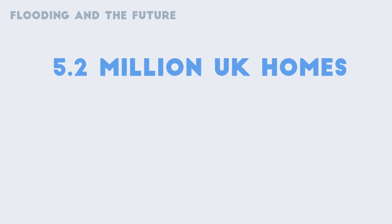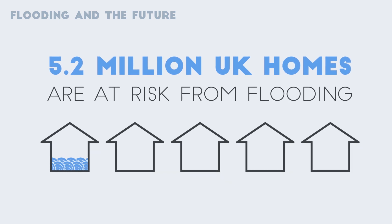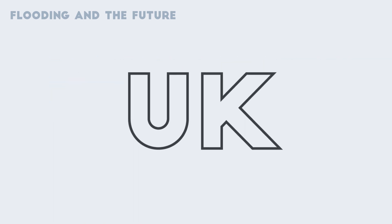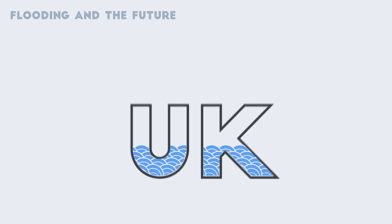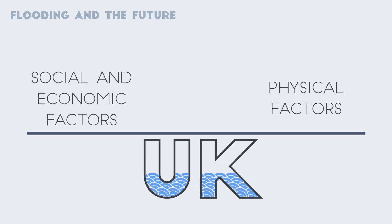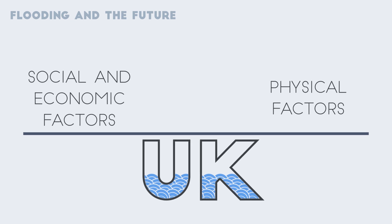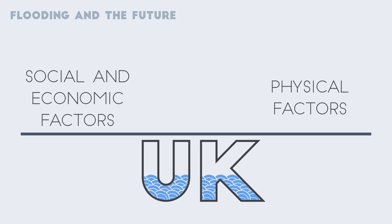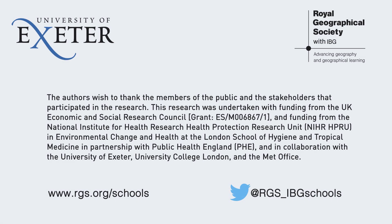In the UK, it is projected that 5.2 million homes are at risk from flooding — that's one in five of the houses in the UK. Looking to the future, we need to think about how the UK's flood risk is changing, and how social and economic factors have as much of a role to play as physical changes to the environment. This will be important if we are to understand how we can combat flooding through both resistance and resilience.